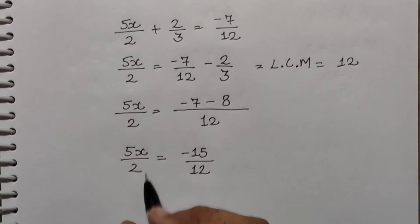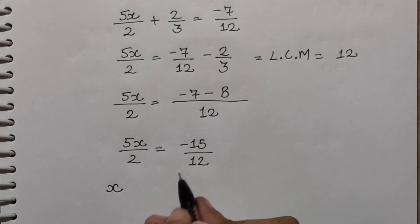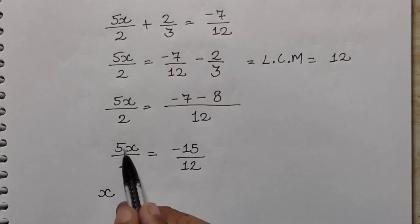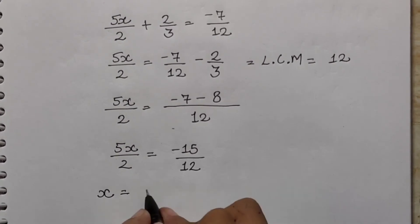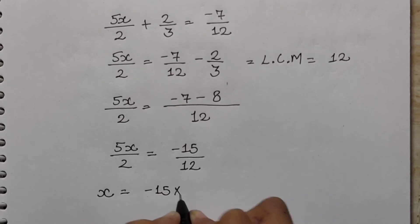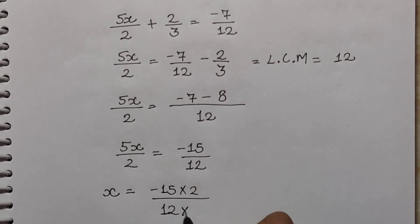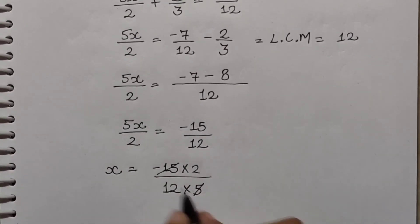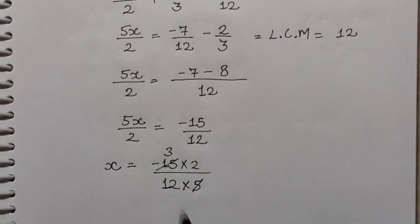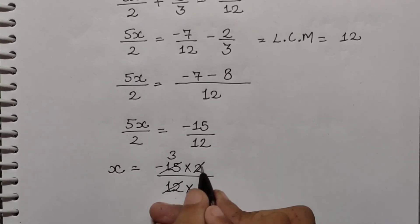Ab x ki value find karni hai, toh x ko side mein lenge. Jo niche hai woh upar aa jaayega aur jo upar hai woh niche — like cross multiplication. So minus 15 into 2, aur yeh 5 niche jaayega, so 12 into 5. Ab hum isko cancel kar sakte hain — 5 se 15 cancel hoga, 3 milega. 12 ko 2 se cut kar sakte hain, 6 milega.